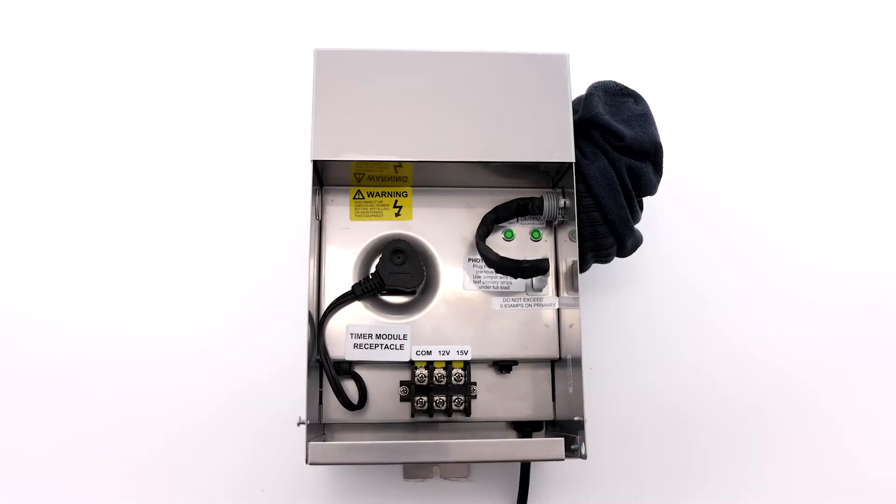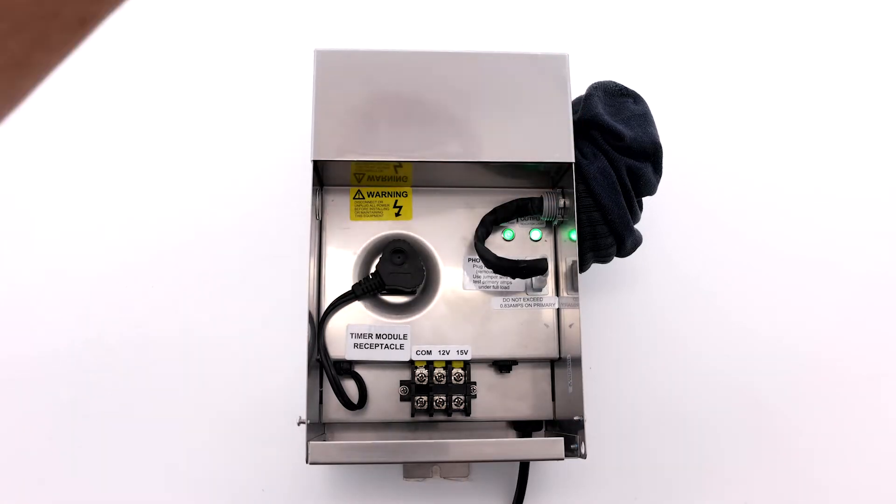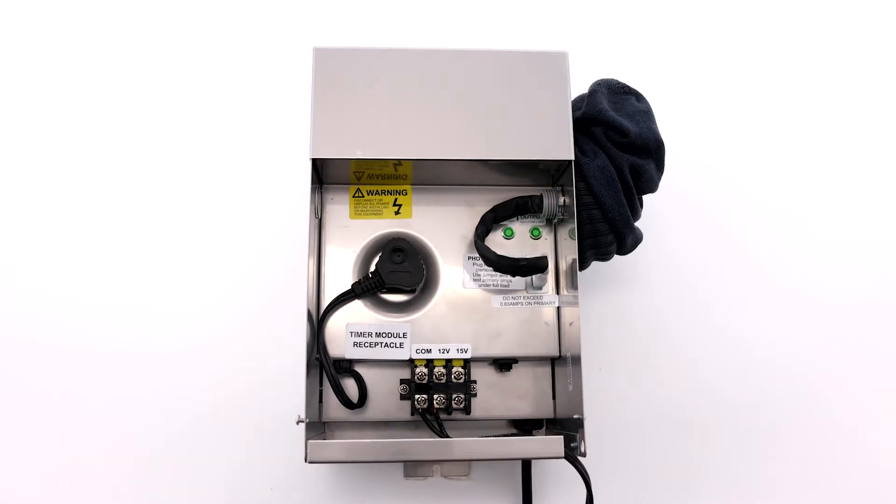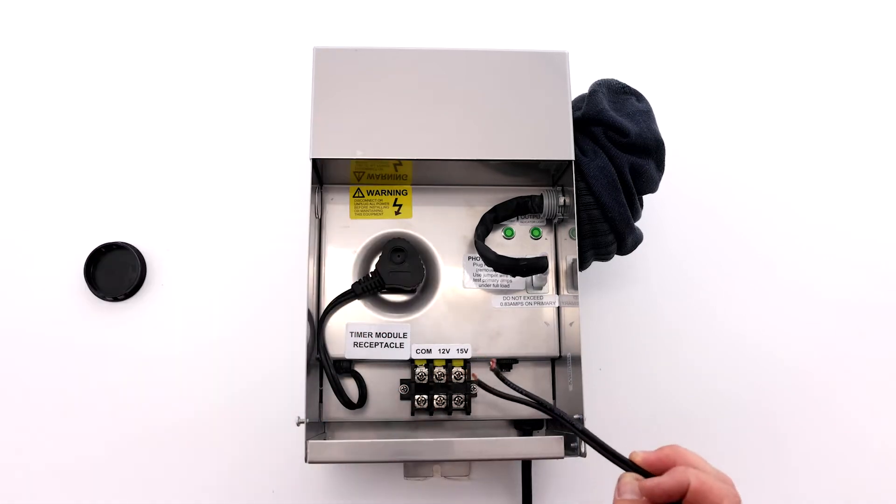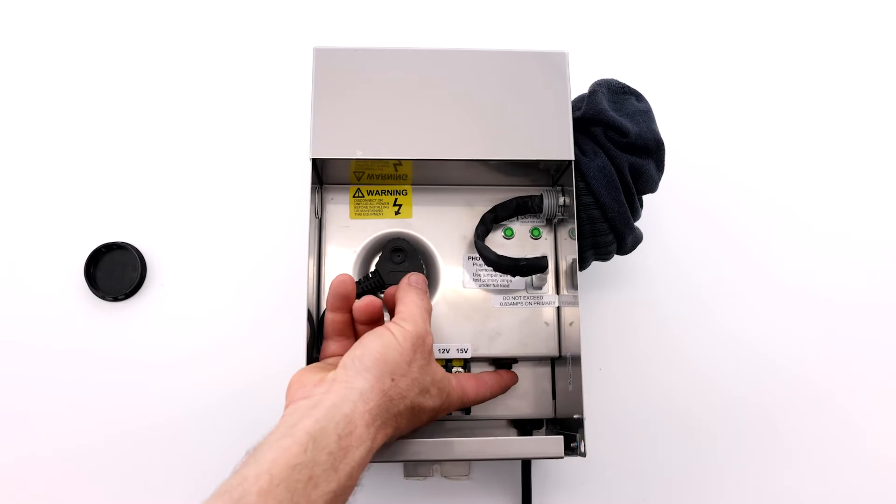Once the photocell is installed, with the photocell completely covered, the plug installed in the socket and power to the transformer, both indicator lights should come on. And if not, and there is a load attached, remove the load wires, check the breaker, and try again.